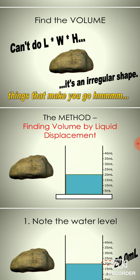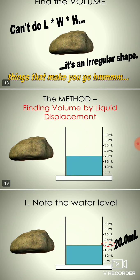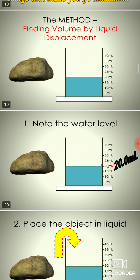The method of finding volume is by the liquid displaced by the object. We have already discussed Archimedes' principle, and with the help of that we will calculate the volume of the irregular shape.